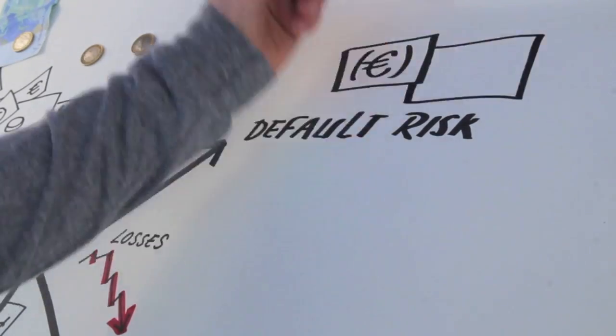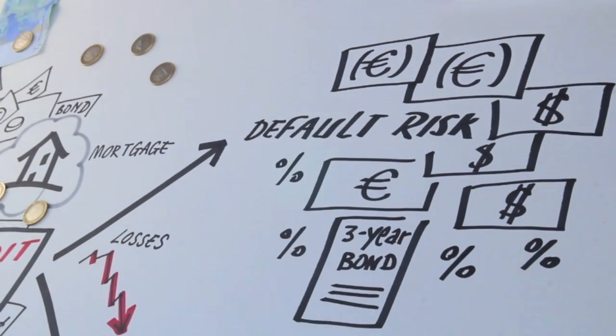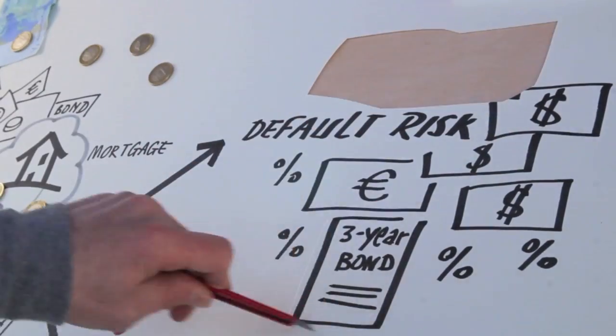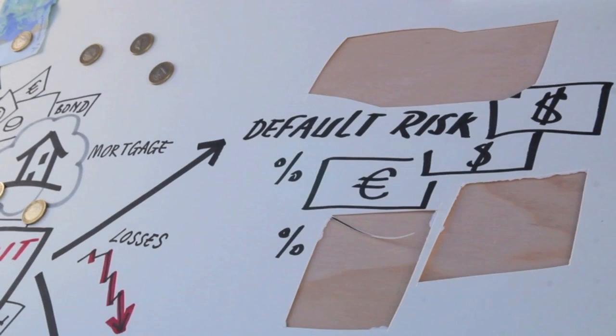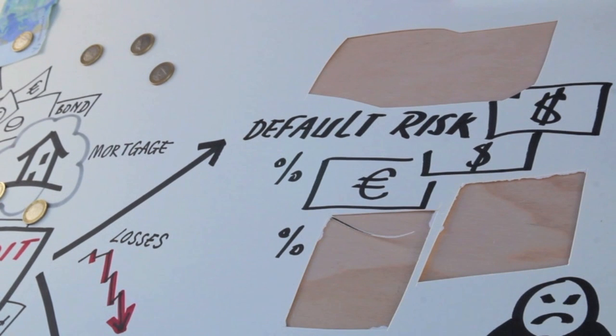Default Risk is easy to understand. Default Risk is the risk of losing money because of the default of our counterparty. As a consequence, our credit is totally or partially lost. If you are a bank, this may be given by a corporate client not able to repay a loan, or a retail customer not repaying a mortgage. But it can also be a bond default, that is to say, the case in which the bond issuer has run out of cash to pay its bondholders.